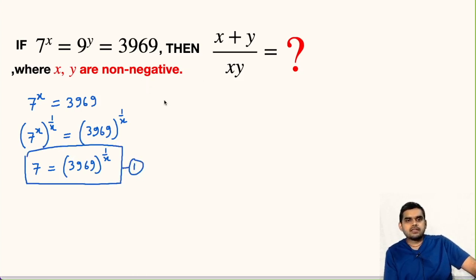Similarly we will equate 9^y equal to 3969 and we will do the same thing. So 9^y whole power 1/y will be equal to 3969 whole power 1/y.